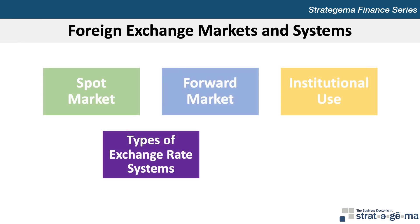The exchange rates of major currencies float relative to other countries without government-imposed boundaries, though a government may still intervene in the foreign exchange markets to influence the market value of its currency. A system with no boundaries in which exchange rates are market-determined but still subject to government intervention is called a dirty float, whereas in a freely floating system, the foreign exchange rate is totally free from government intervention. Some countries today use a pegged exchange rate system. For example, Hong Kong has tied the value of its currency, the Hong Kong dollar, to the US dollar since 1983. Thus, its currency value is fixed relative to the US dollar, which means that its value moves in tandem with the US dollar against other currencies.